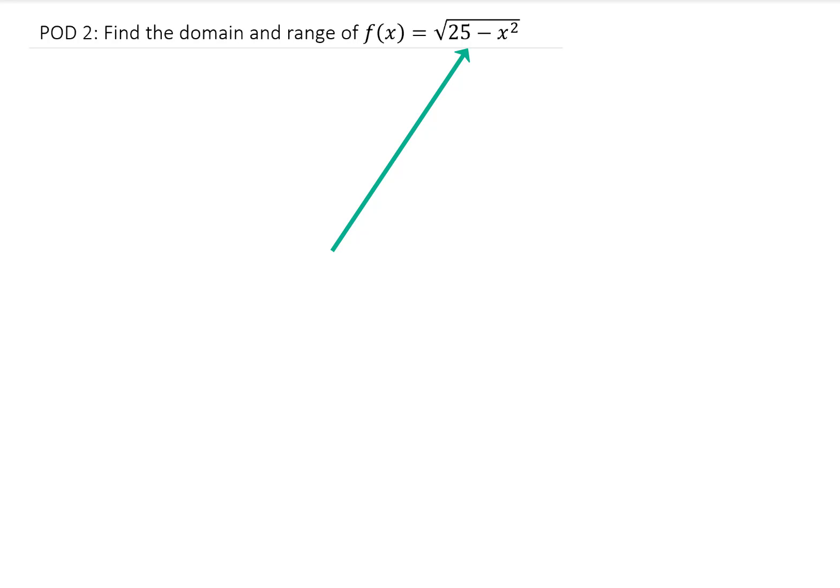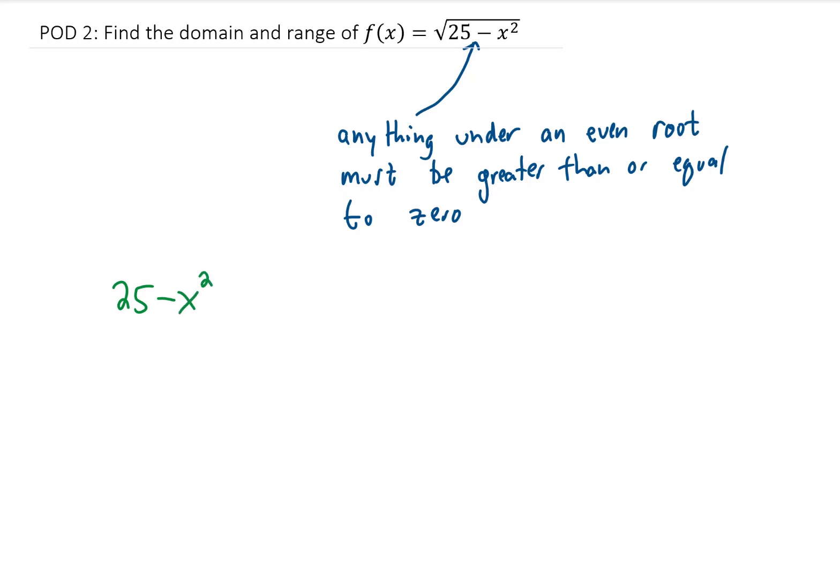The specific domain rule that we need to remember for this problem is that if we have something under an even root, and in this case we have a square root, the thing under that even root has to be greater than or equal to zero. What that tells us mathematically for this problem is that 25 minus x squared, the thing under the even root, has to be greater than or equal to zero.